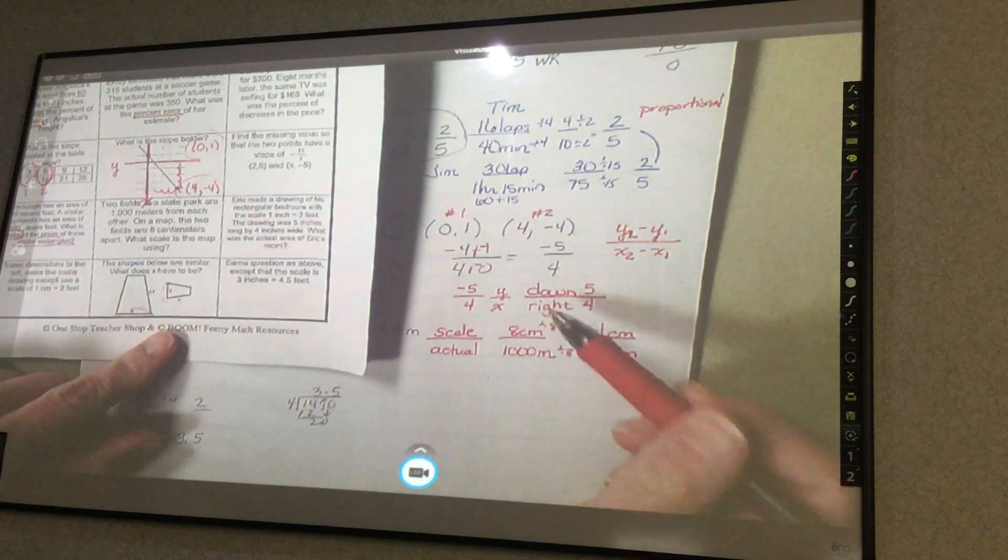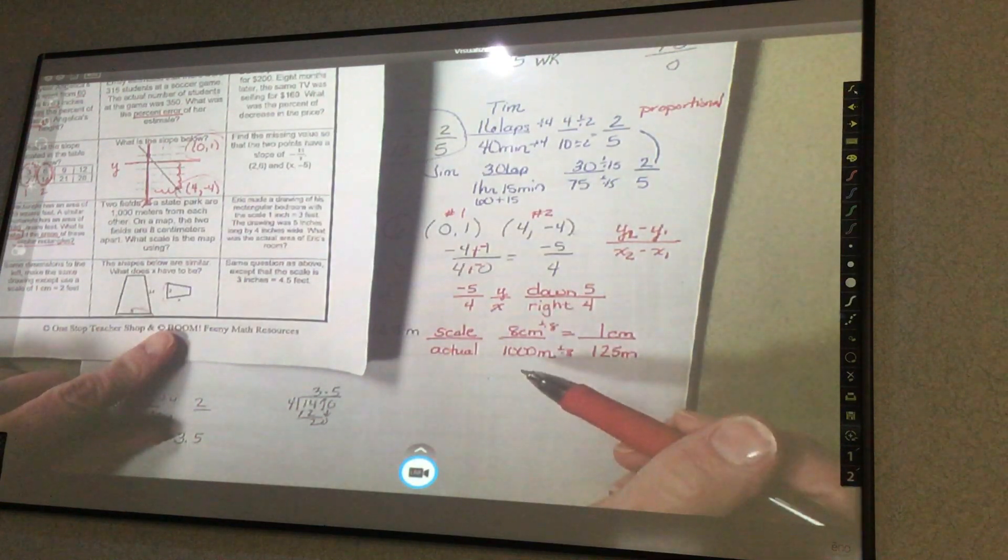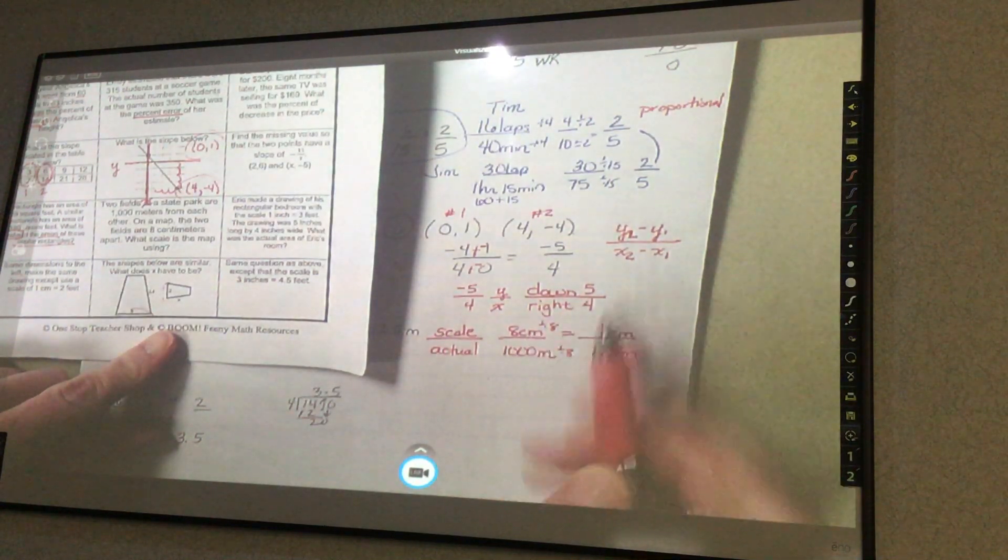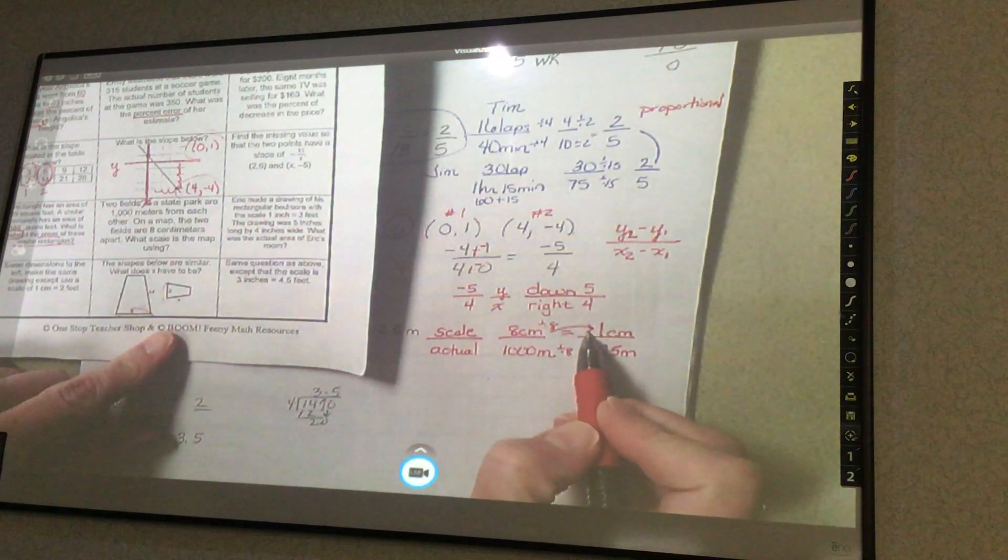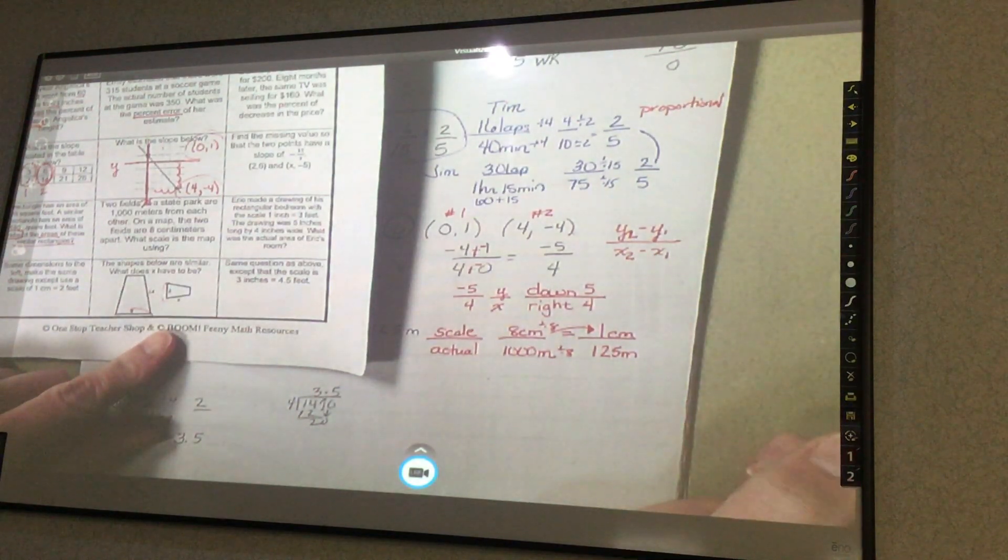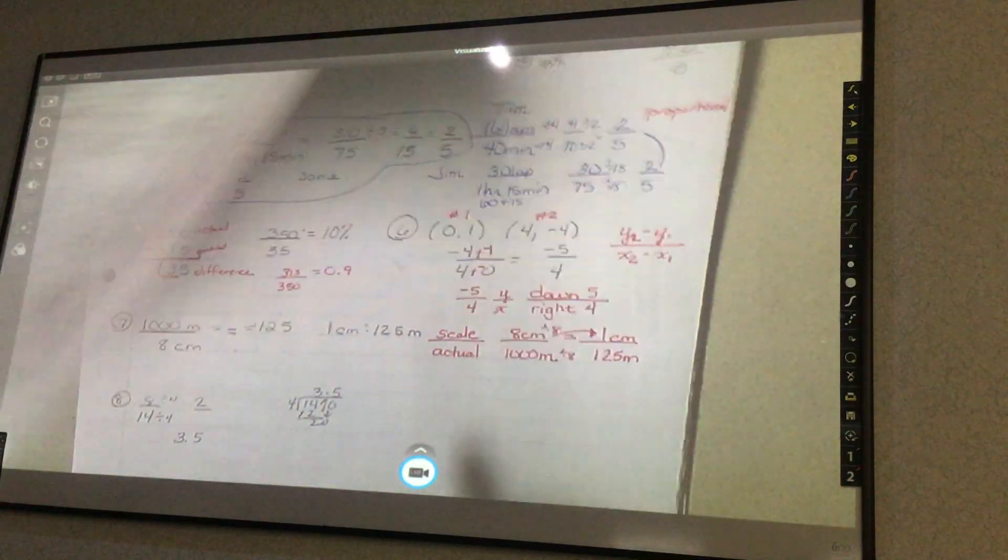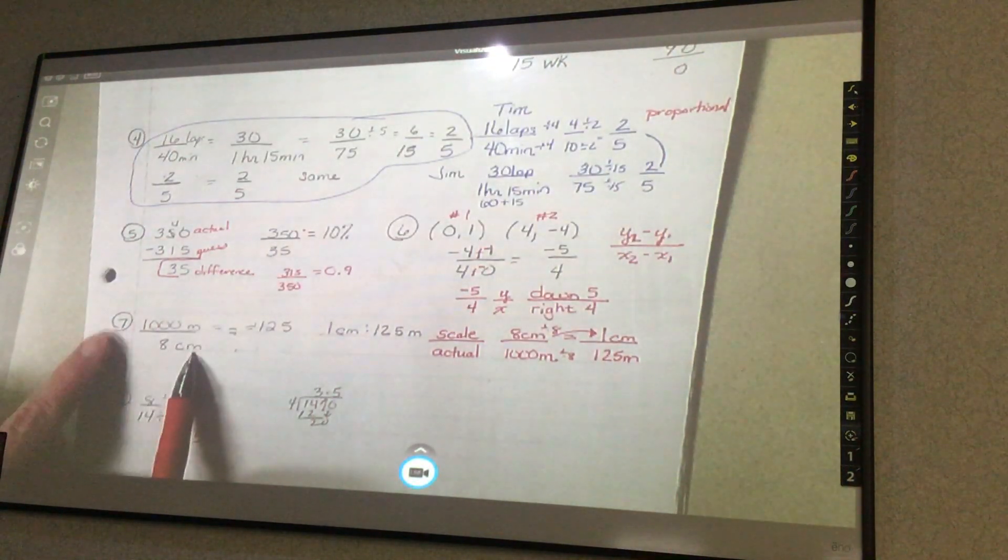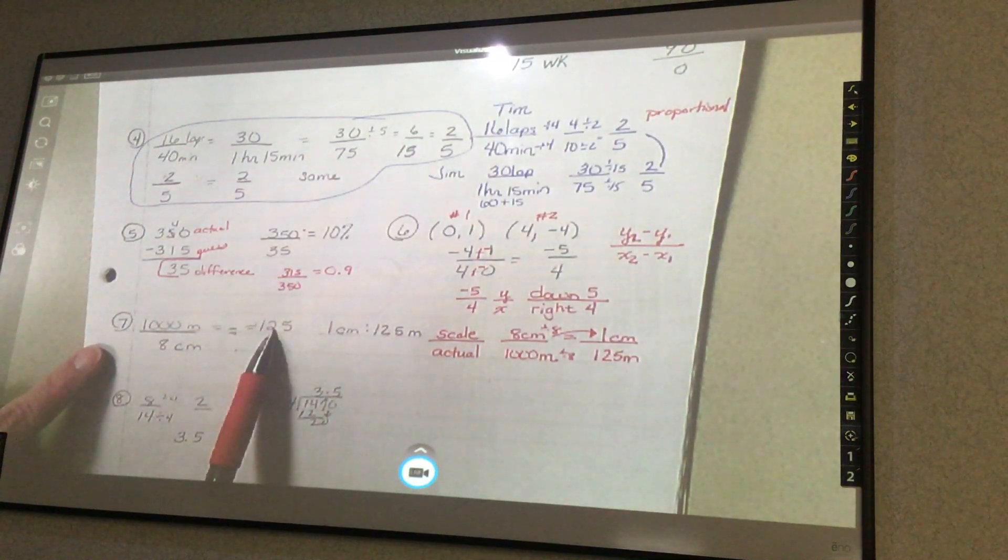Divide by 8. So then I have to divide the bottom by 8, which is 125. And that's all you had to do. Wow. Scale on top, actual on the bottom. And then to get to scale, you have to always, scale is always going to be represented as a 1. So is that the answer? That's it. Actually, I did it this way. I took 1,000 meters divided by 8. That's what I did. And I got 125.